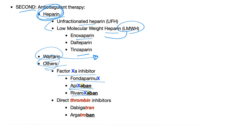Apixaban and rivaroxaban are factor Xa inhibitors. Look at the name: 'api-XA-ban' — XA is the active factor 10 (Roman numeral), and 'ban' because it's an inhibitor. Rivaroxaban similarly contains the X. Who said pharmacology is difficult? The name has the answer right in it.